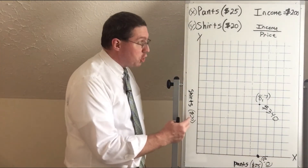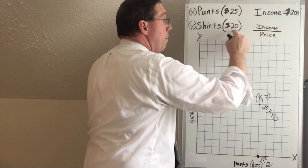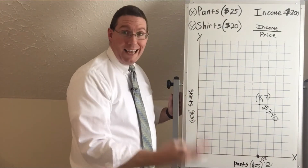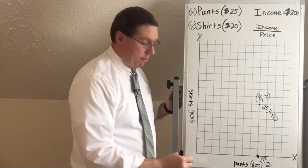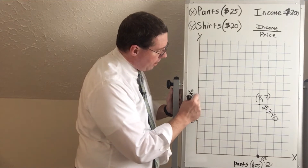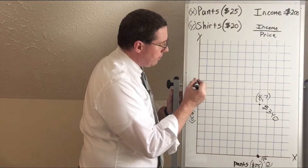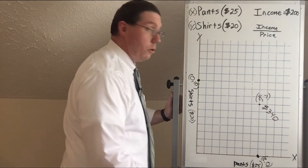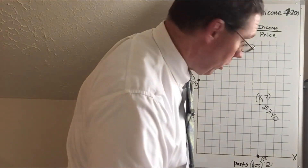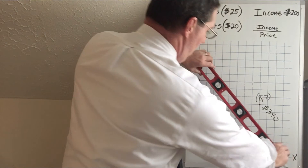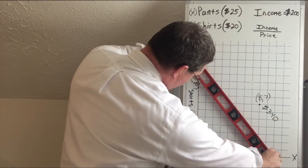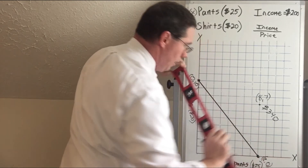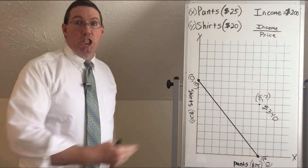Now we do the same for shirts: $200 divided by $20 equals 10. So this household could buy 10 shirts and no pants at all. We count up one through ten on the y-axis and put a dot there, representing zero pants and 10 shirts. Then we get a ruler, connect those two dots with a straight line, and that line is our budget line.